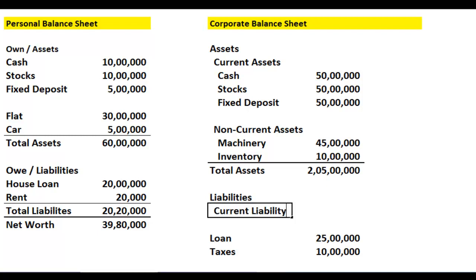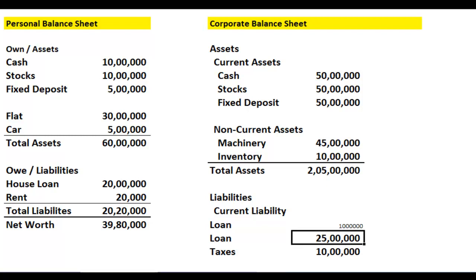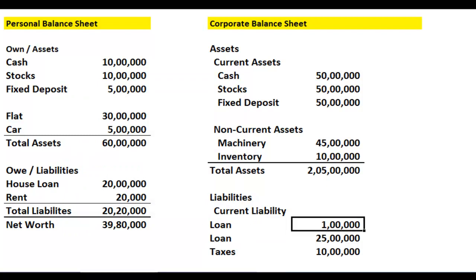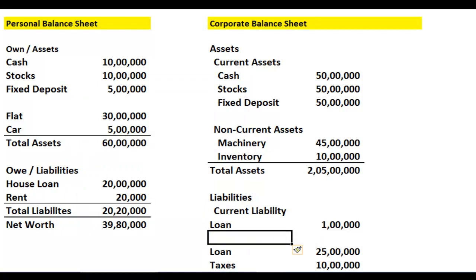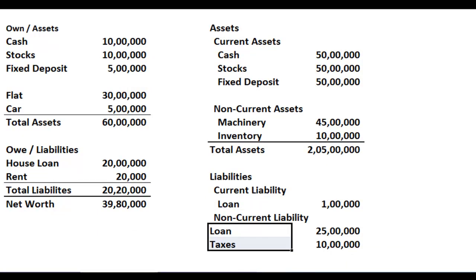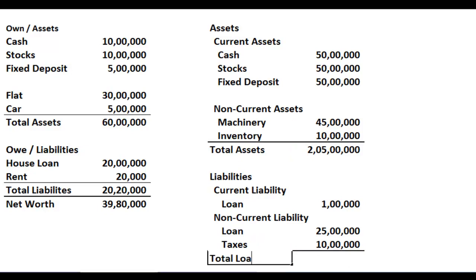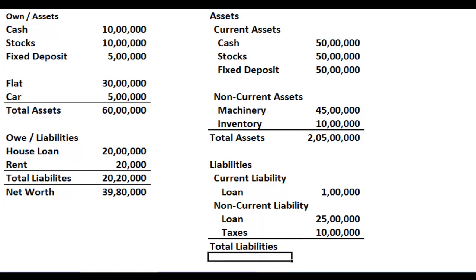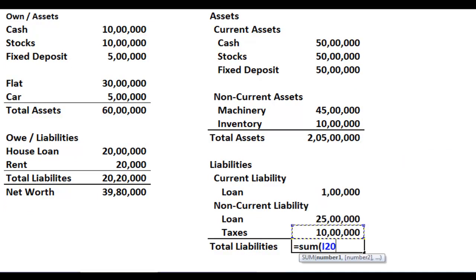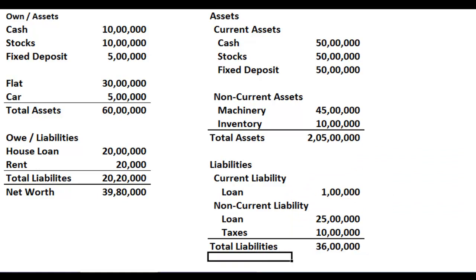What is a current liability? It's the part of the loan you owe in this financial period. Maybe you owe only 1 lakh this financial period — that's your current liability. The remaining amount you owe only much later, not immediately — that is called a non-current liability. Your total liabilities are simply the sum of your current and non-current liabilities.